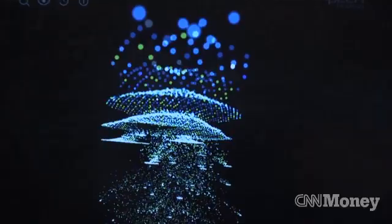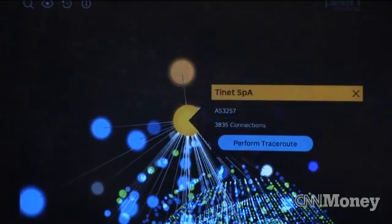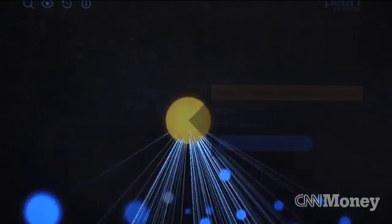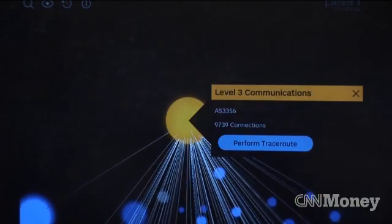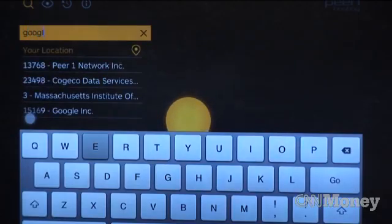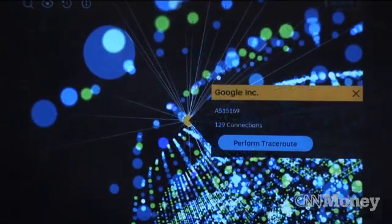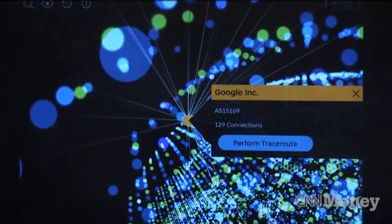Within those divisions, the app then clusters the nodes based on which other hubs they're closely connected with. Content delivery networks such as Level 3, which serve up most of the Internet's content, are represented by giant dots at the top. Big networks like Google are slightly smaller but more closely connected with other networks, and websites like CNN.com are even smaller and a bit farther from the center.